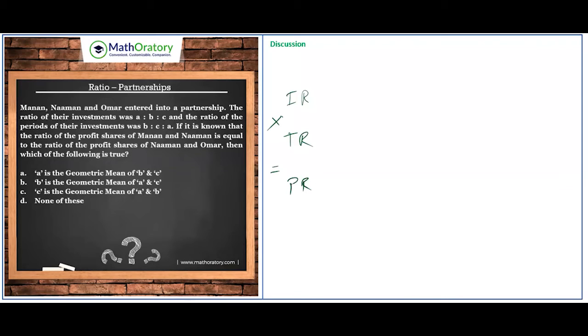In this case, we have these three individuals: Manan, Naman, and Omar. The investments are in the ratio a:b:c, and the time periods that they're making the investment for are in the ratio b:c:a. You can simply multiply ratios whenever the actual things are multiplied to get the profit ratio as ab:bc:ca. This is the profit ratio.